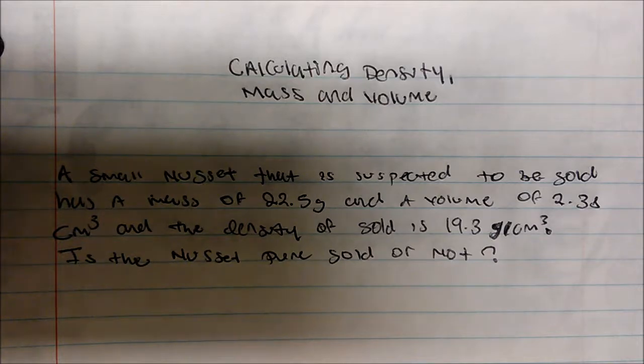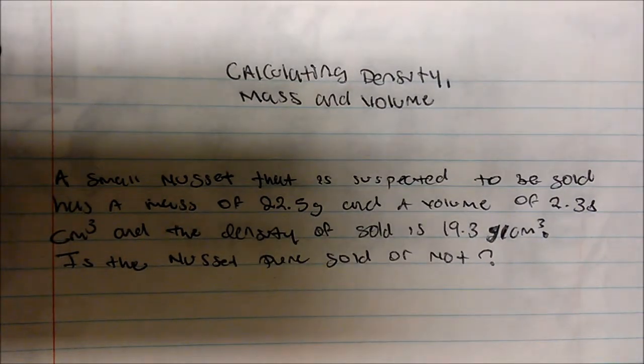Okay, the process is what we need to be familiar with. And so if I look at this question, it says a small nugget that is suspected to be gold has a mass of 22.5 grams and a volume of 2.38 cubic centimeters. The density of the solid is 19.3 grams per cubic centimeters. Is the nugget pure gold or not?